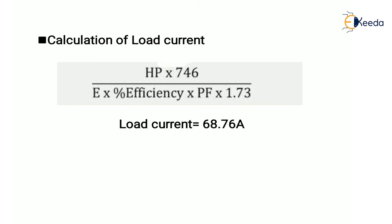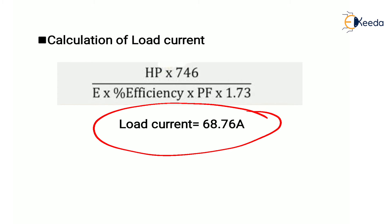Selection of the cable is based upon current carrying capacity, voltage drop, and short circuit rating. First, we calculate the load current using the formula: HP × 746 divided by (√3 × voltage × efficiency × power factor). We have 45 HP, so multiplying by 746 and dividing by √3 × 415 × 0.85 × 0.8, we get the load current as 68.76 amperes.